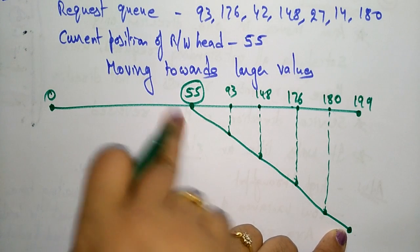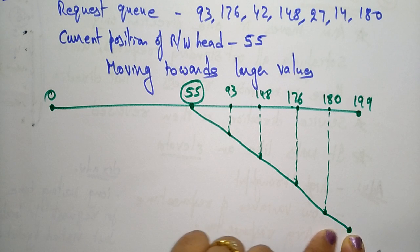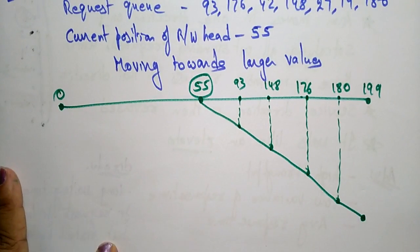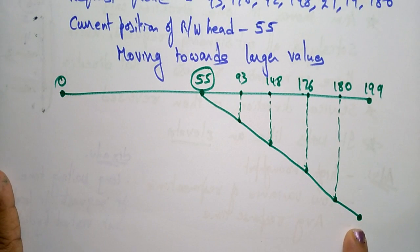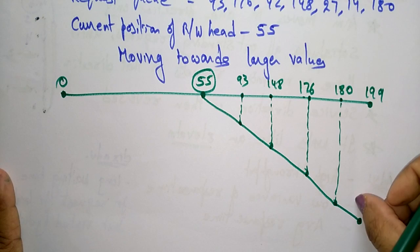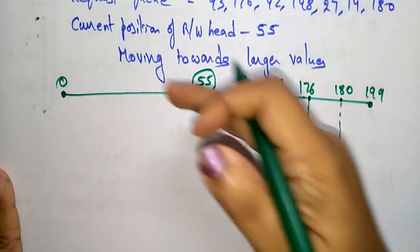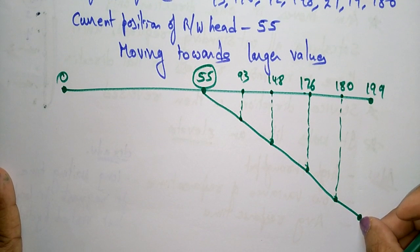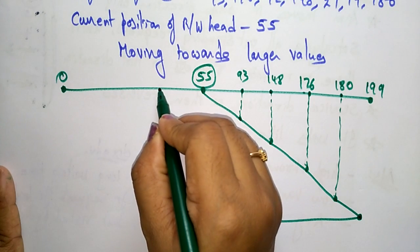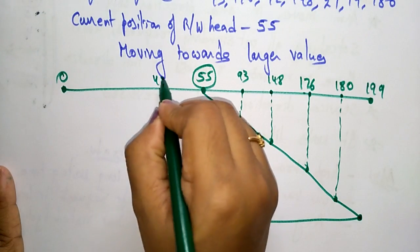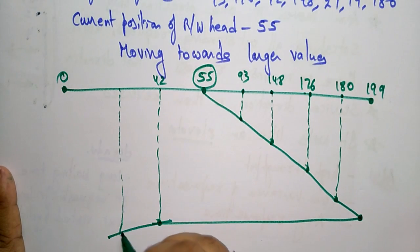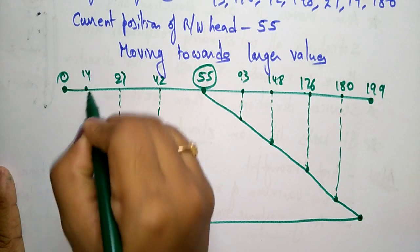The scan has to move until the last point in the track. While moving backward it has to reach back, and going this way again takes a lot of time, so it is better to move to the end position and check whether any track is still waiting. After reaching 199, it reverses and moves toward smaller values, serving track 42, then 27, then 14.